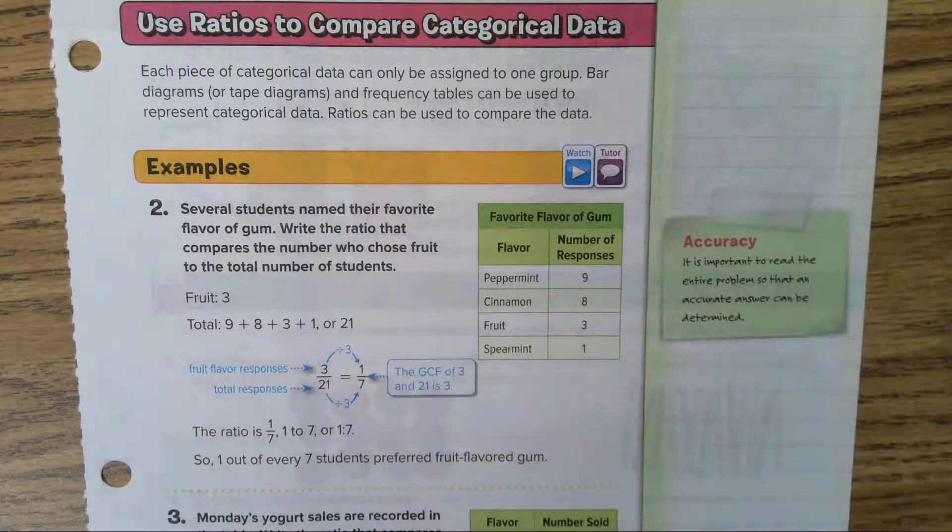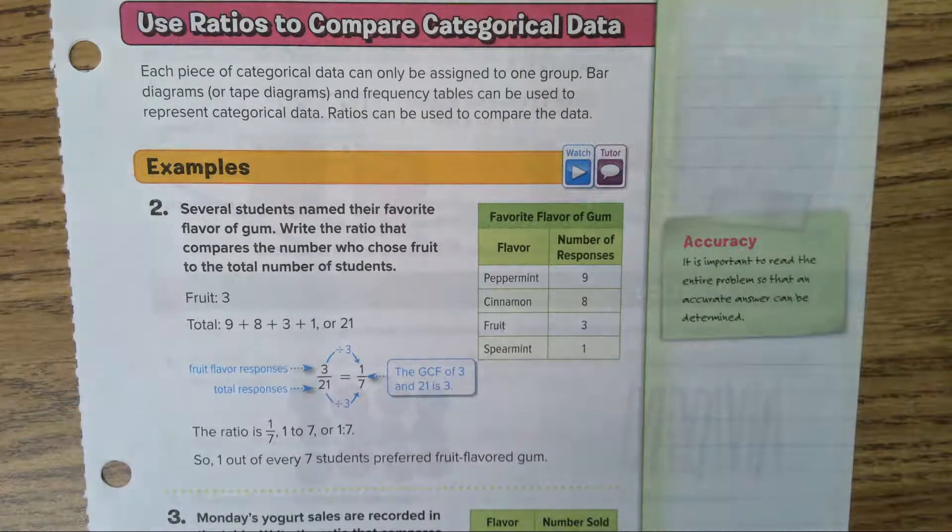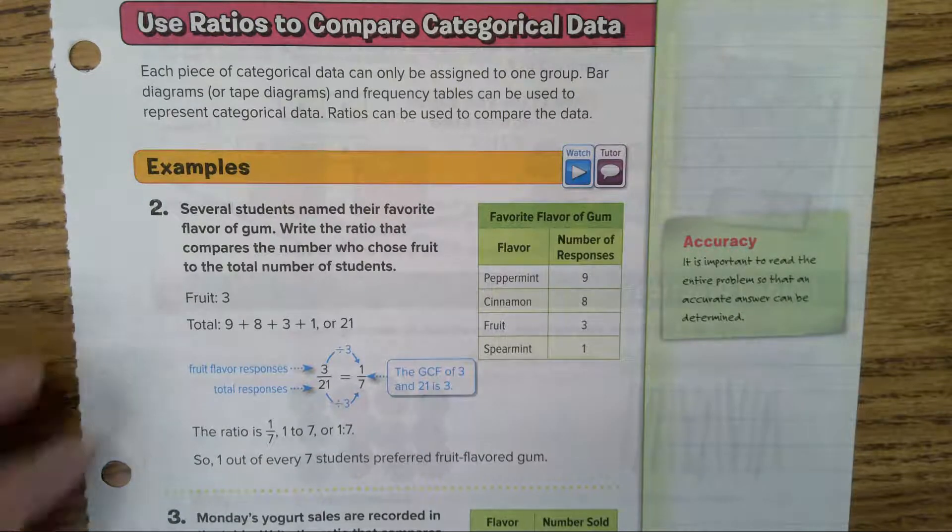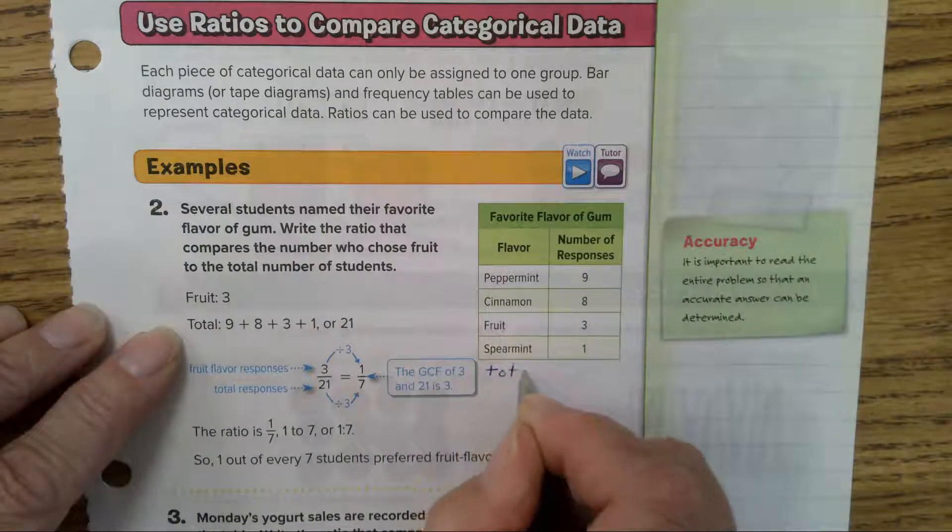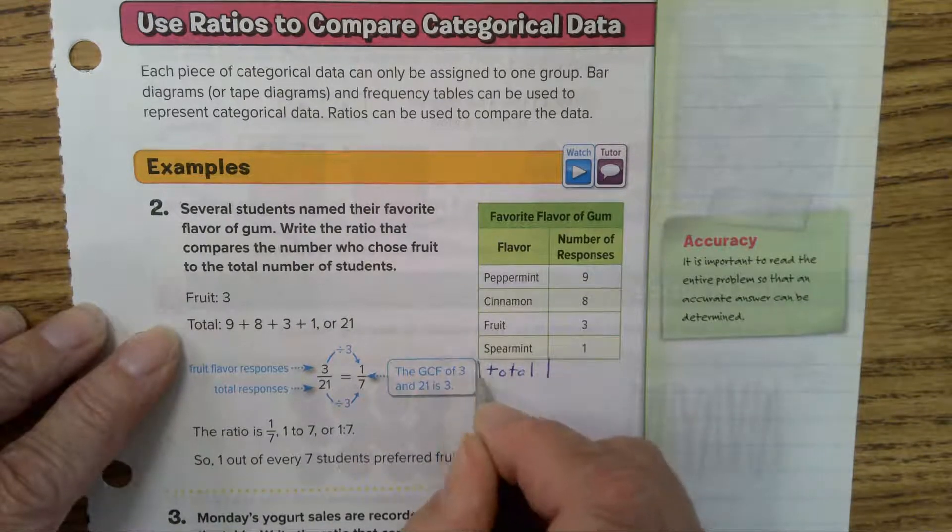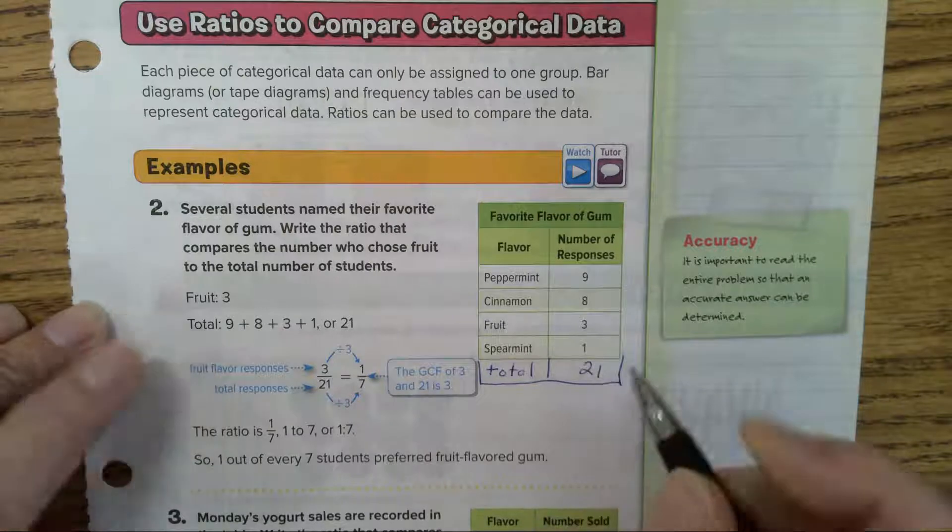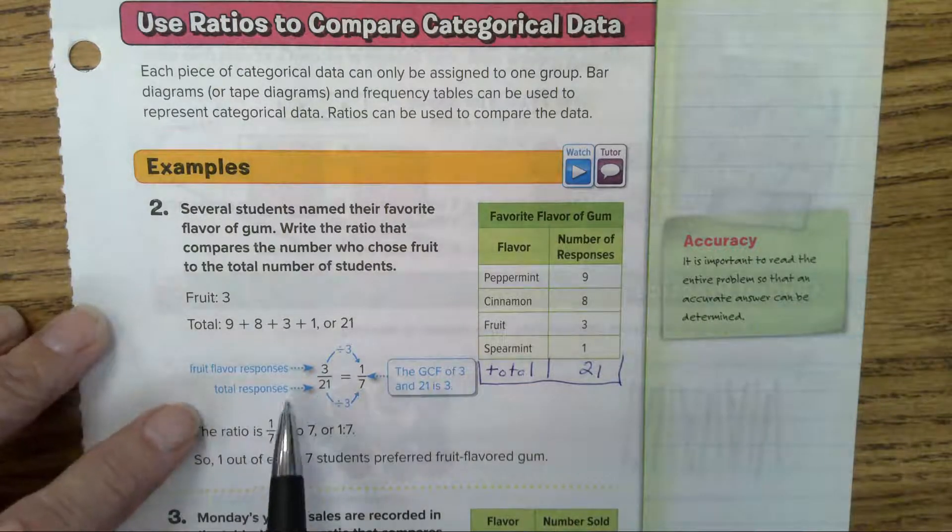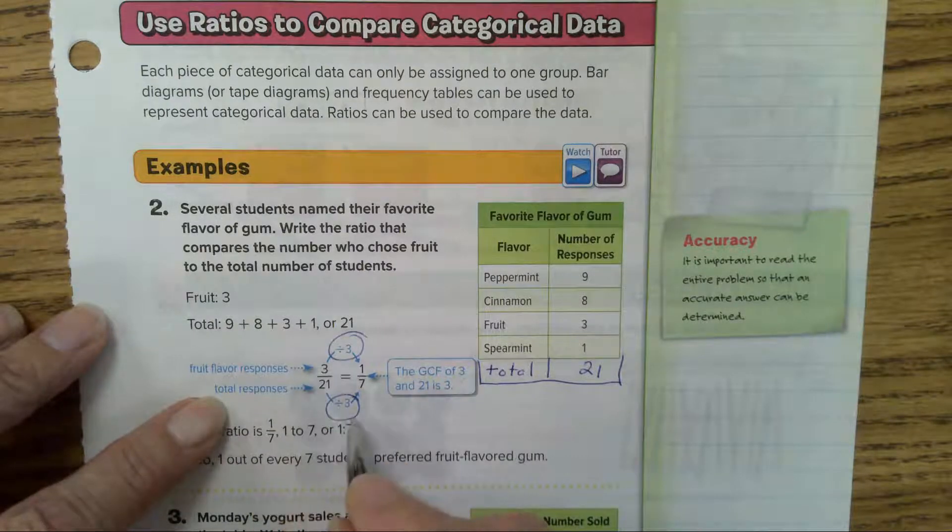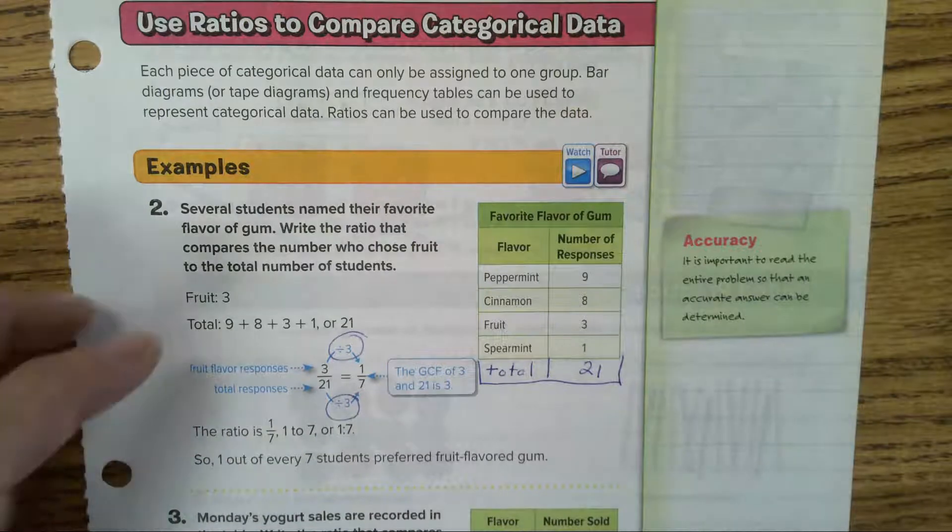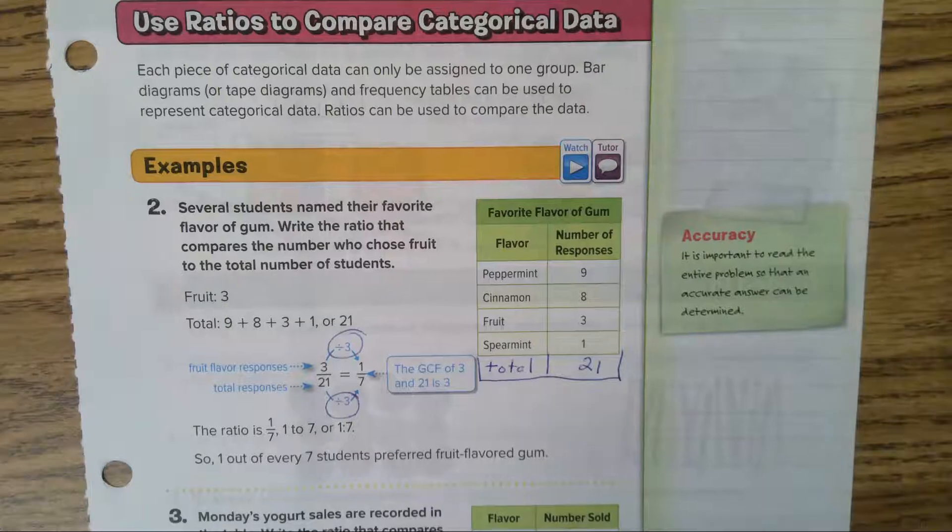Number two: Several students named their favorite flavor of gum - peppermint, cinnamon, fruit, and spearmint. Write the ratio that compares the number who choose fruit to the total number of students. How many chose fruit? Three. Total, you have to add them all together, so I'm going to add another category called total.